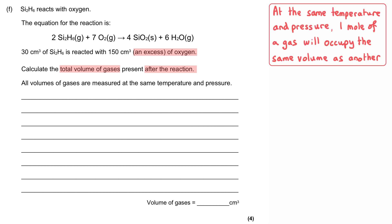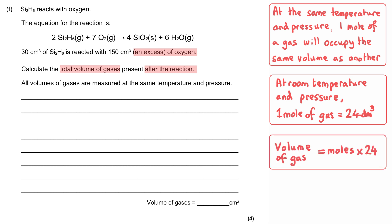Dealing with that final sentence first, since we're talking about the same temperature and pressure, we need to remember that one mole of any gas will occupy the same volume as any other gas at the same temperature and pressure. At room temperature and pressure, this volume is 24 decimeters cubed. This means that the volume of any gas equals its number of moles multiplied by 24 if we're talking about room temperature and pressure.